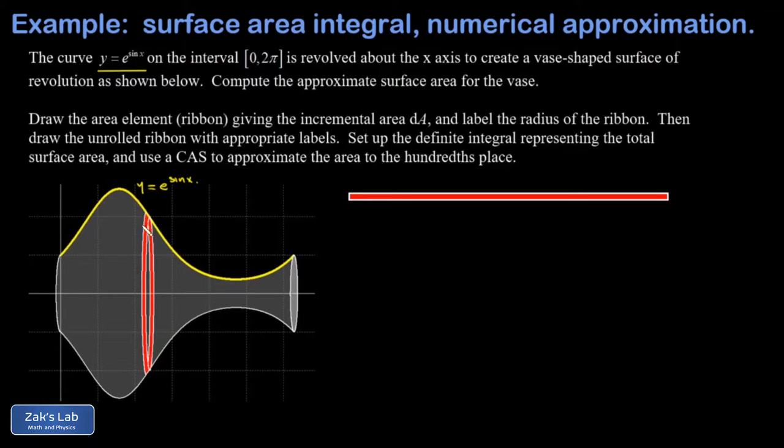I've shown one of these ribbons - we've sliced it into a thin ribbon that gives a little area contribution to the total surface area. The ribbon is located at position x, and to find its area I need the radius, which is just the y value at that x: e^(sin x).